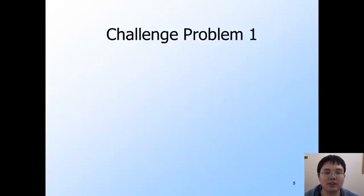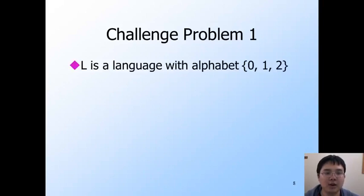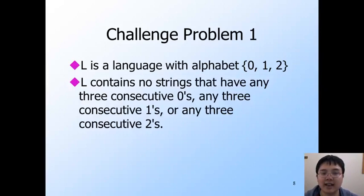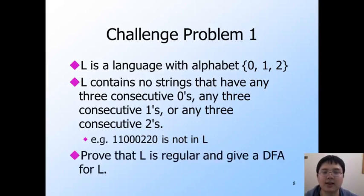Lastly, we will show our solution to the first challenge problem. The problem says that L is a language with alphabet 0, 1, and 2. L contains no strings that have three consecutive zeros, three consecutive ones, or three consecutive twos. For example, the string 11000220 is not in L because it contains three consecutive zeros. The task is to prove that L is regular and then give a DFA for L.